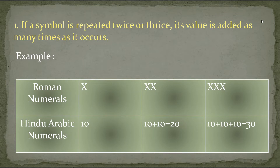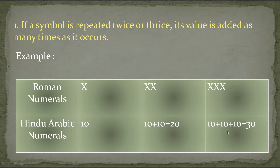X written once is equal to 10. If we write X two times — that means 10 plus 10 — which is equal to 20. So XX is equal to 20. Same way, if we write X three times, it will become 10 plus 10 plus 10 which is equal to 30.